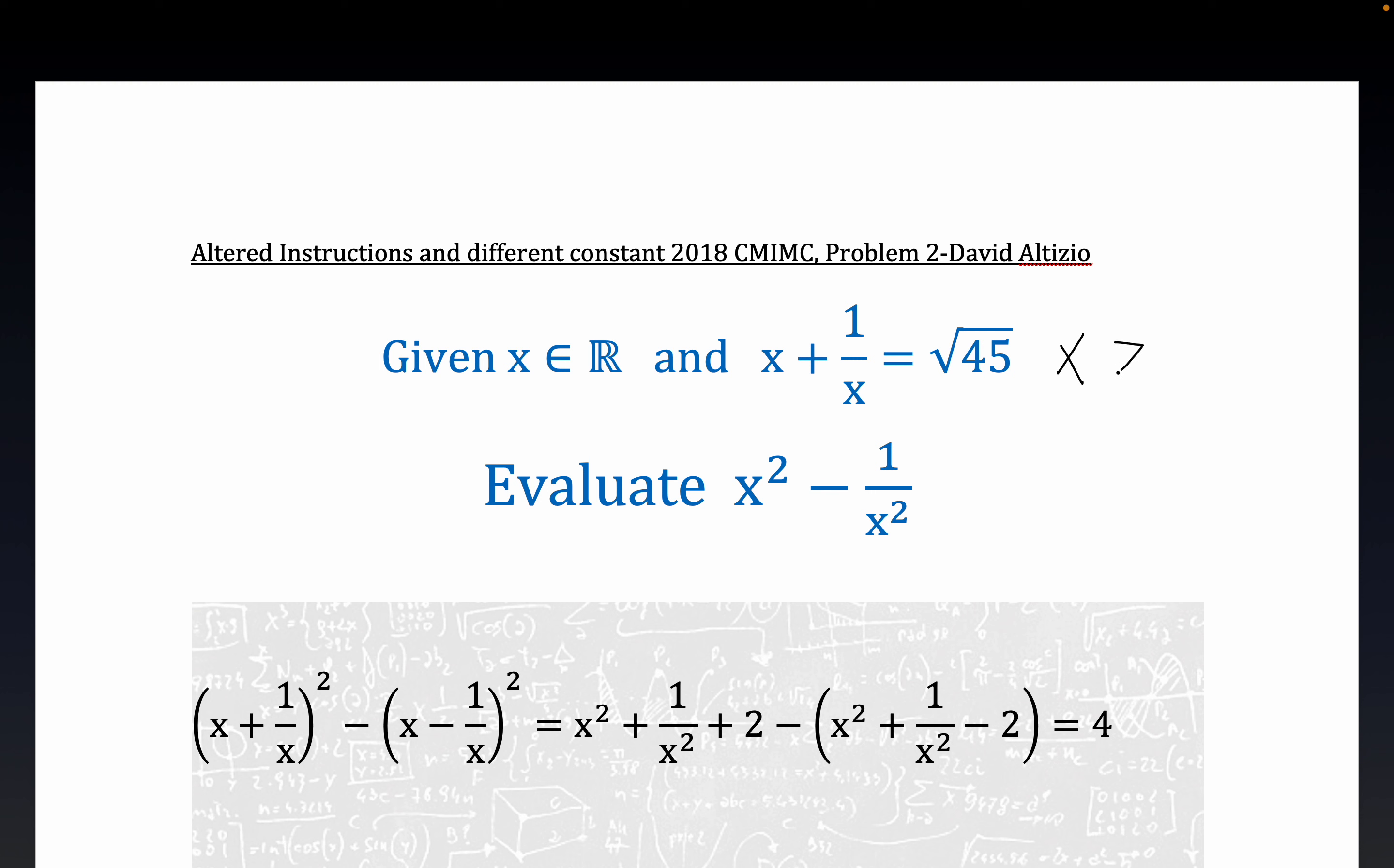Now I've altered a little bit of the instructions. I think the problem writer said that he wanted x to be greater than 1, but I lifted that. We can conclude that x is greater than 0 just because the sum of two positive numbers has to be another positive number. There's no way you can have a minus sign working in here.